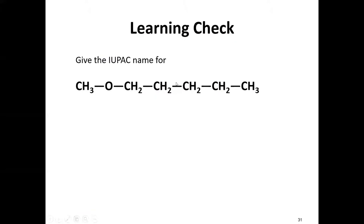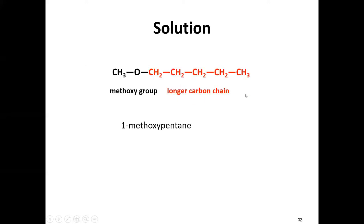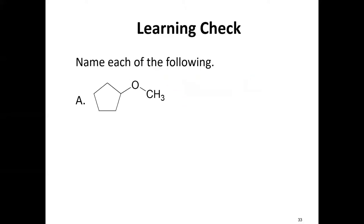Let's try another: split at the oxygen. One side has one carbon, the other has one, two, three, four, five. Five is the longest side — that's the alkane name. The single carbon becomes methoxy. This is methoxypentane (or 1-methoxypentane). I won't give you anything with attachments on the main chain that you'd have to name — just find the oxygen, split it, name the shorter side as alkyl-oxy and the longer side as the regular alkane.